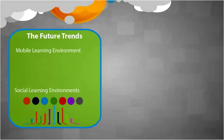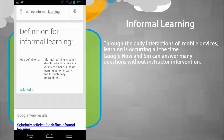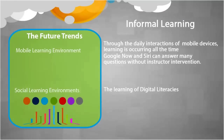With mobile learning environments, there is also informal learning. Through the daily interactions of mobile devices, learning is occurring all the time. One example is asking your device a question. Google Now and Siri can answer many questions without instructional intervention. In the mobile learning environment, the learning of digital literacy is another example.